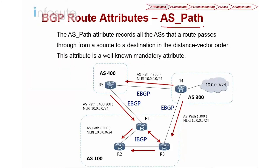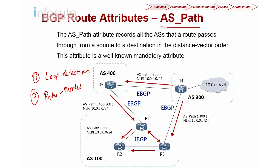AS path is a well-known mandatory BGP attribute. It has two uses: first, it is a loop detection mechanism; and second, it determines the path — based on the shortest AS path, that route is used as the optimum route.